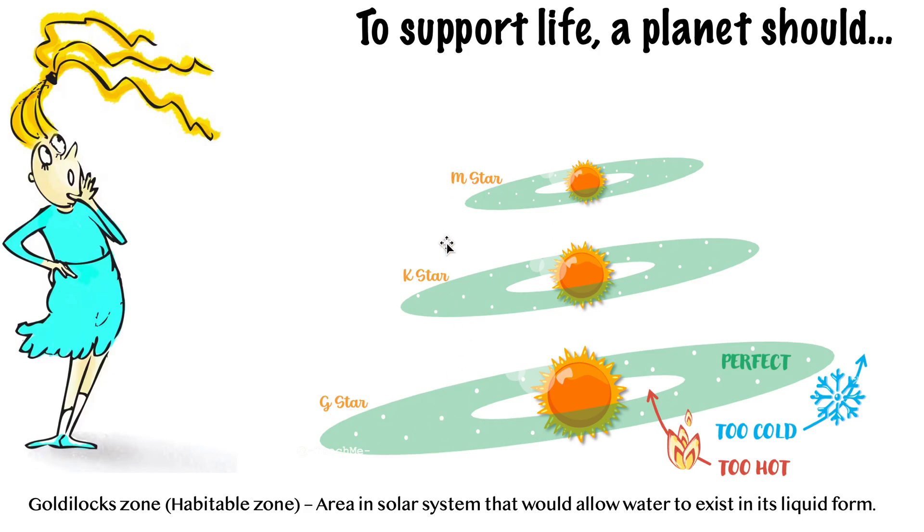These other ones, notice a K star, for example, this Goldilocks zone is slightly smaller. So it's even rarer to find a planet there that would have the right temperature for water to exist. And an M star is even smaller. So just know that our sun is a G star and it has a very large Goldilocks zone. And our Earth is located inside this Goldilocks zone. And any planet that wants to sustain water needs to be in this Goldilocks zone.